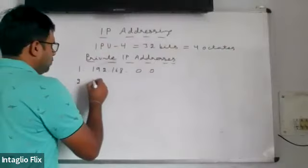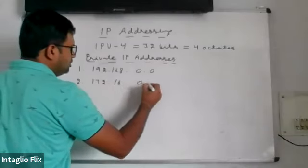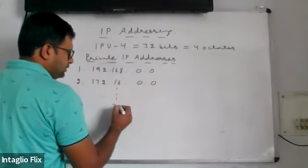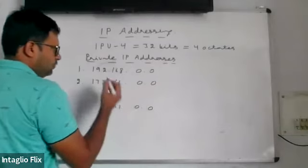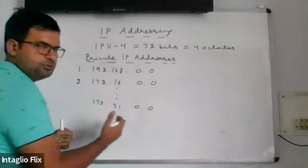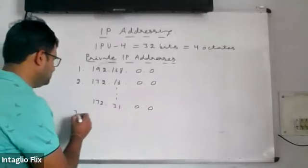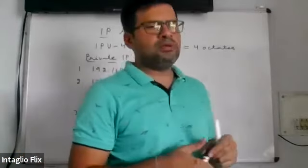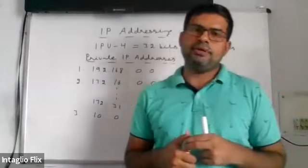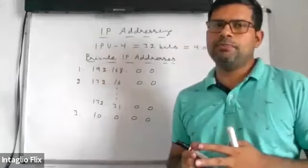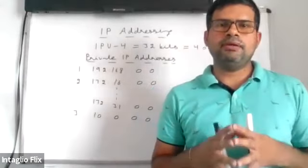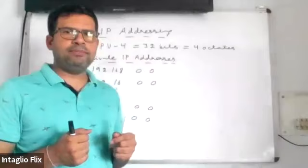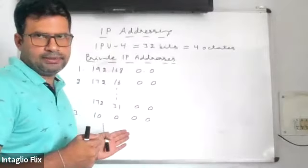The second private range is 172.16.0.0 to 172.31.0.0. These are the three ranges of IP addresses reserved for private IP addresses. Whenever you need private IP addresses, you will take them from one of these three ranges only.